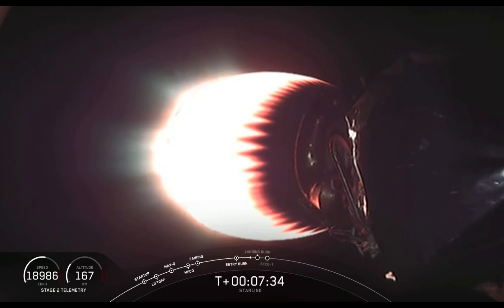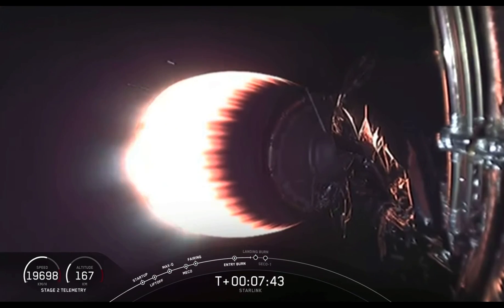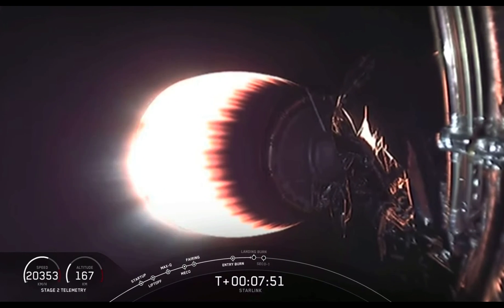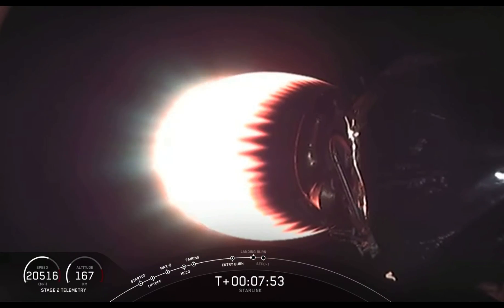Oh, and as you just heard, we've just gone transonic on stage one as it's making its way back down to the drone ship. So the atmosphere is actually what's slowing the vehicle down, stage one, as it's now reentering the Earth's atmosphere and coming down to the thicker parts. That's what slows the vehicle down.